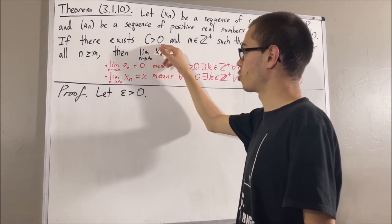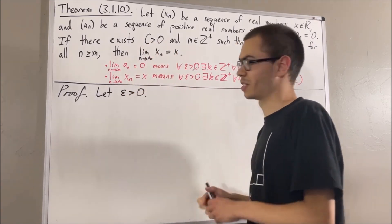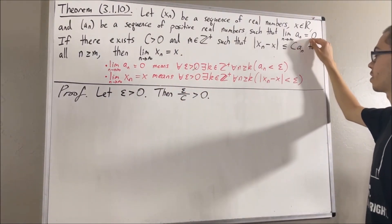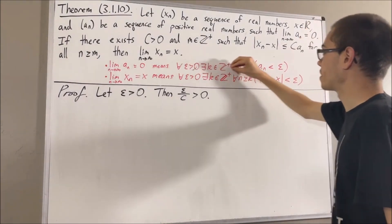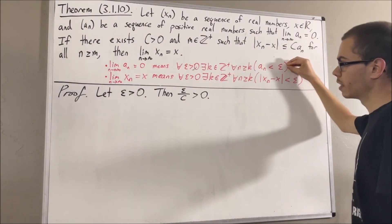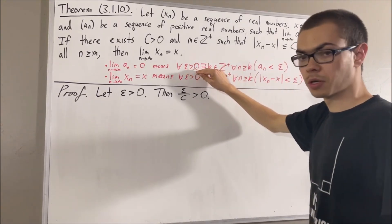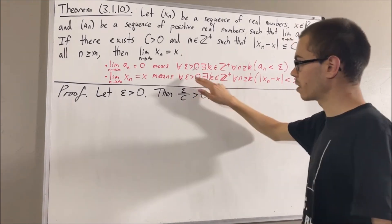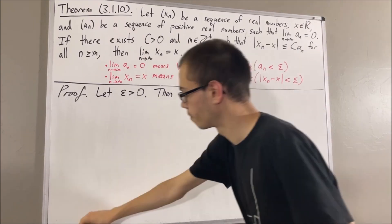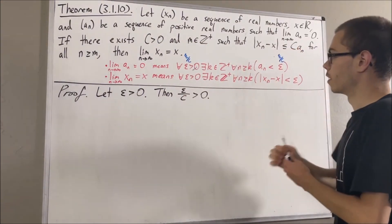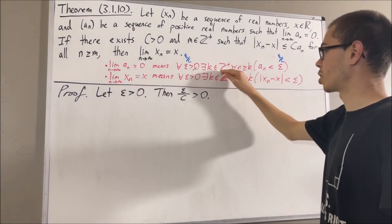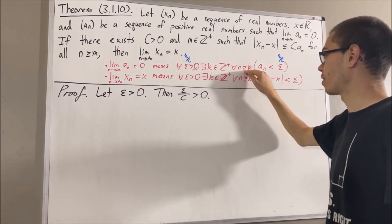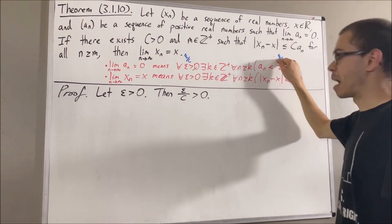Since c is greater than zero, it follows that epsilon over c is greater than zero. And since we know an converges to zero, this means this statement is true for every positive real number. So it must work for the positive real number epsilon over c that we have in our proof. Taking this epsilon to be epsilon over c, it follows that there is some positive integer, I'll call it p, which satisfies: for all positive integers n greater than or equal to p, an is less than epsilon over c.